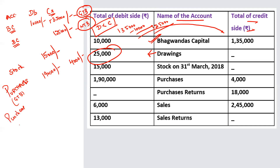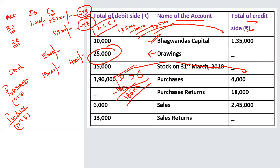For purchases in the net trial balance: the difference is 1,90,000 minus 4,000 equals 1,86,000. Debit is more than credit, so we write 1,86,000 on the debit side.